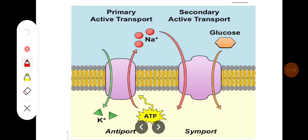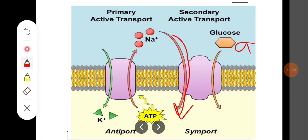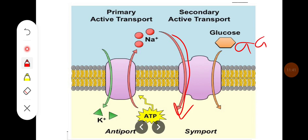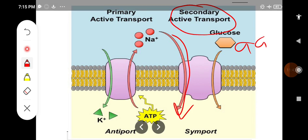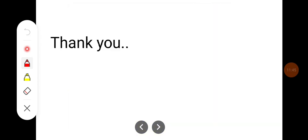In summary, the sodium-potassium pump pumps sodium out of the cell, creating a concentration gradient. Because of this gradient, sodium moves back into the cell, and glucose or amino acids also move inside the cell along with it — this is secondary active transport. This concludes the brief overview of active transport. Thank you.